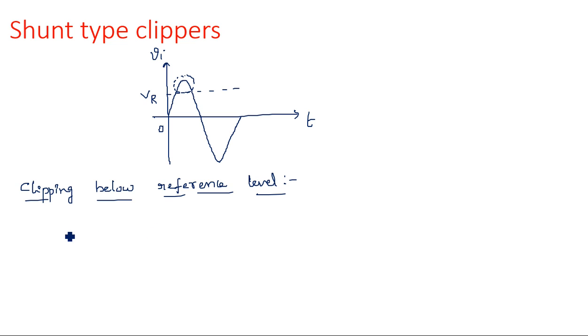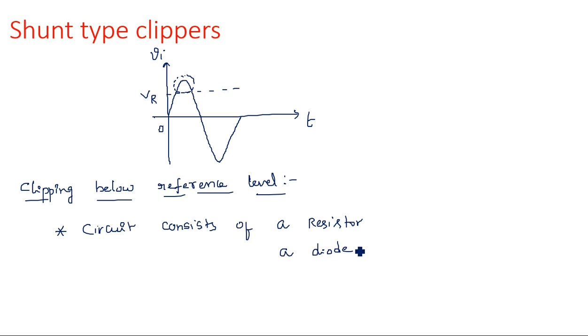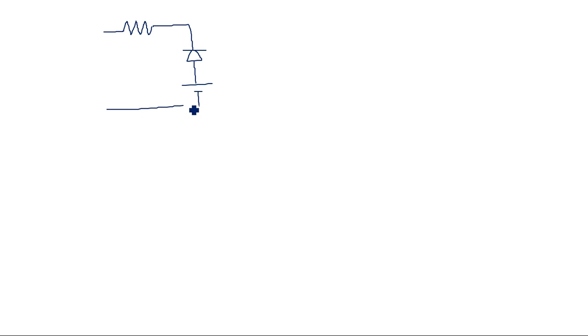Now let us consider the circuit diagram. The circuit consists of three primary components: a resistor, a diode, and a reference voltage VR. As I said, the circuit has a resistor followed by a diode — the diode must be connected in the reverse bias condition — and the reference voltage is kept with positive polarity in the same direction.